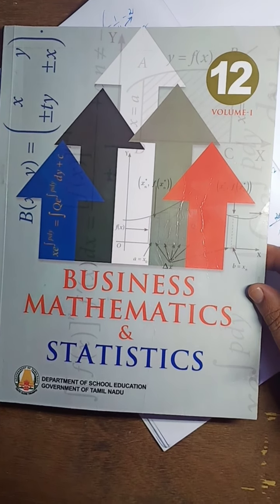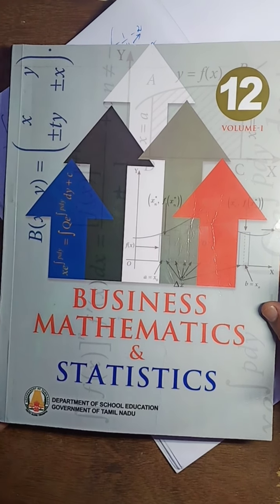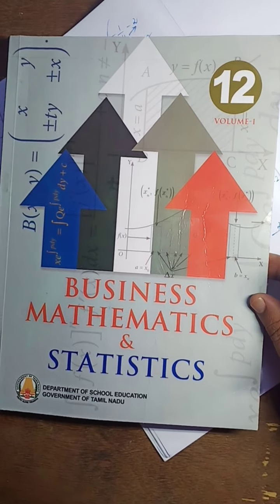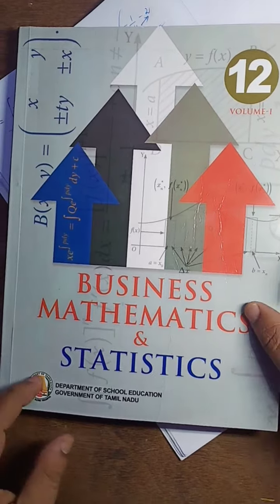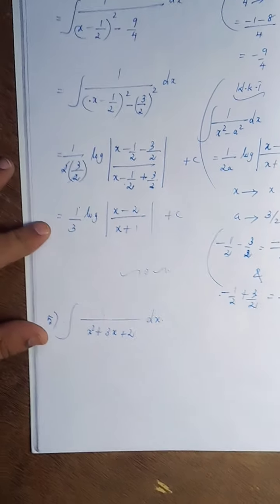This is Sivakumar, 12th Standard Business Mathematics and Statistics, Chapter Number 2, continuation of Exercise 2.7, Problem Number 5.